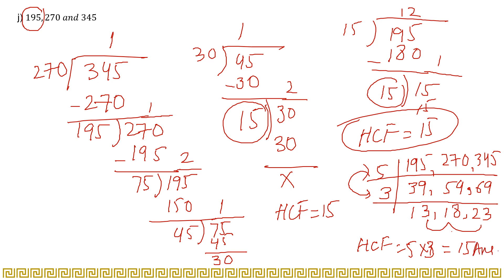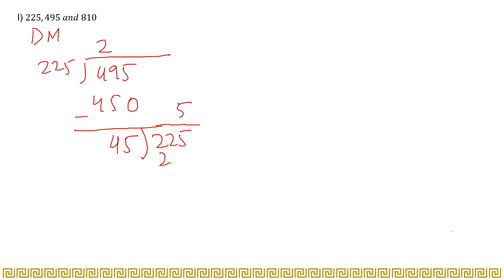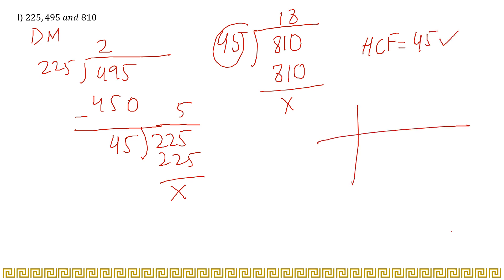Now the last part: 225, 495, and 810. Using the division method for 225 and 495: 225 times 2 = 450; subtracting 495 minus 450 gives 45. Keep 225 as the dividend. 45 times 5 = 225, remainder 0. So HCF of 225 and 495 is 45. Now use 45 and 810: 45 times 18 = 810, remainder 0. So the HCF of all three numbers is 45.